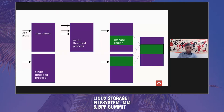Let me change the slide. I drew this little diagram last night to illustrate the differences between what we already have and what we intend to have going forward — what's the difference between what we do and what we do with M-Share? On the left there, you can see a pair of single-threaded processes. There are two MM structs, each of them has a task struct which points to the MM struct. Straightforward.